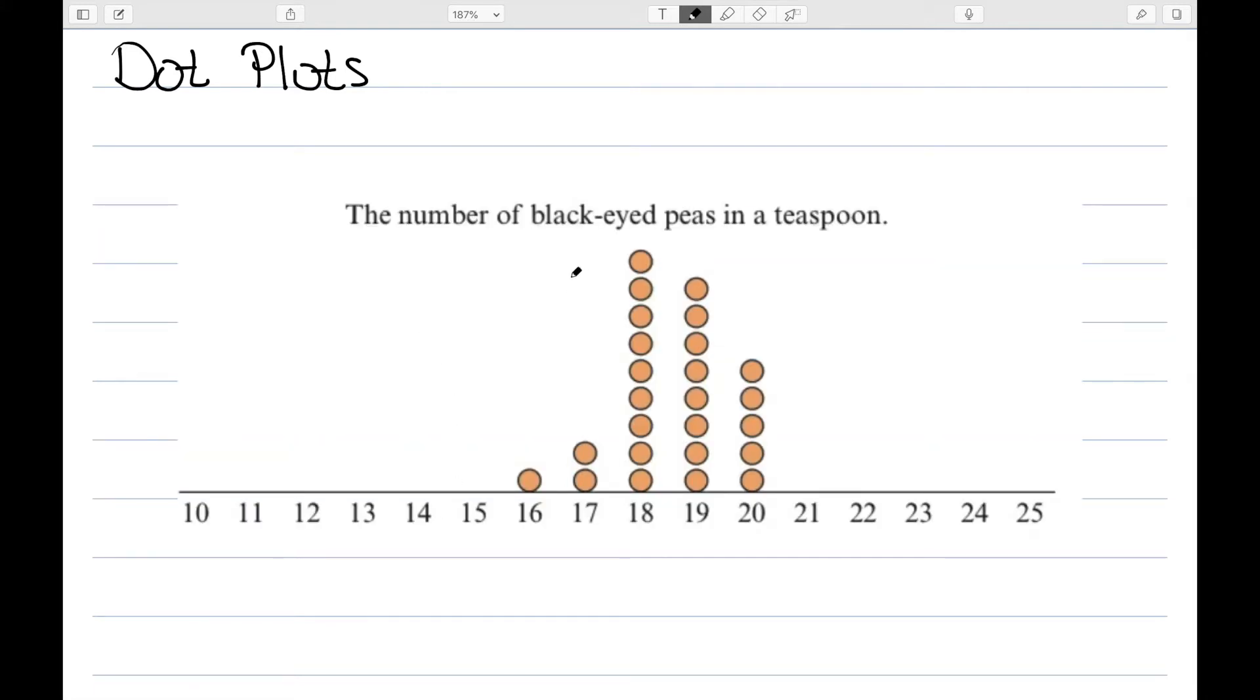Here's an example of a dot plot of the number of black-eyed peas in a teaspoon. We have the number line and we just have little dots to represent each data value. We had one teaspoon that had 16 black-eyed peas, two that had 17, etc.